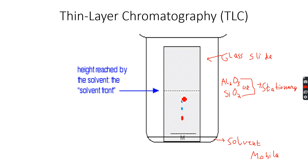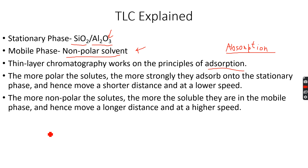In this diagram, let's label the spots A, B, and C. C has moved the shortest distance, which means C is the most polar among A, B, and C — it has most strongly adsorbed onto the stationary phase. A is the least polar, meaning it is the most non-polar, so it is more soluble in the solvent and has moved the largest distance at the fastest speed, as you can see in the diagram.